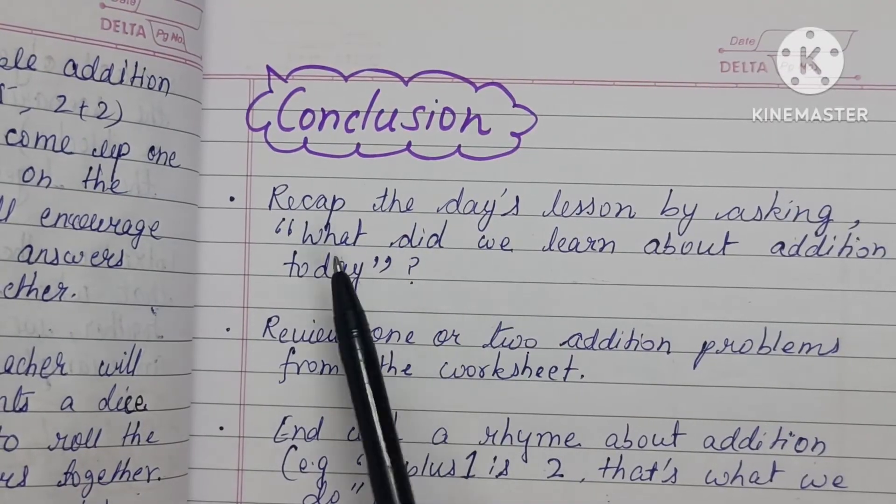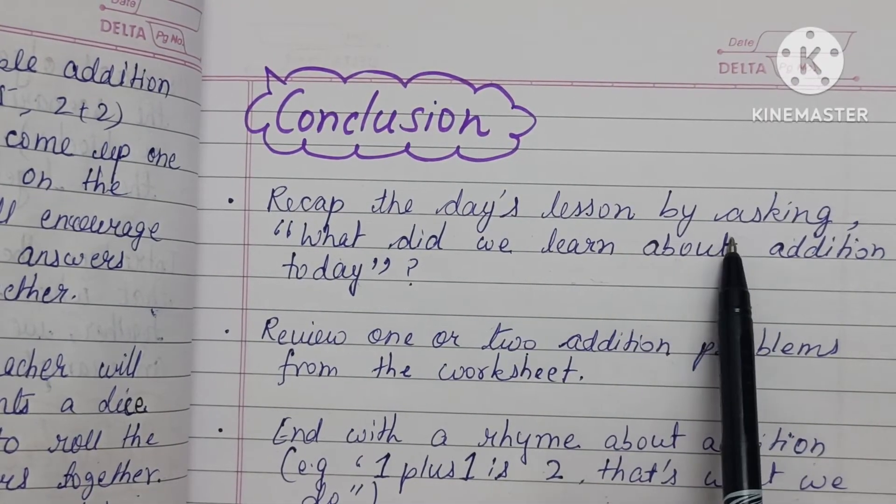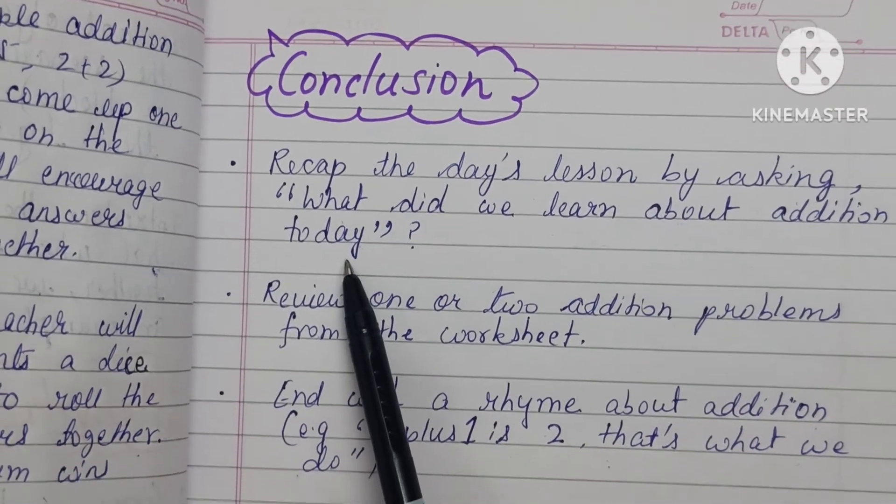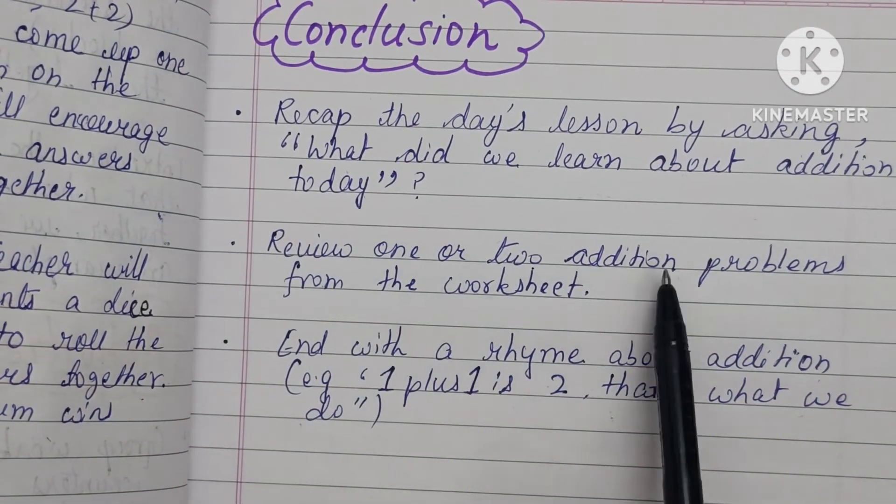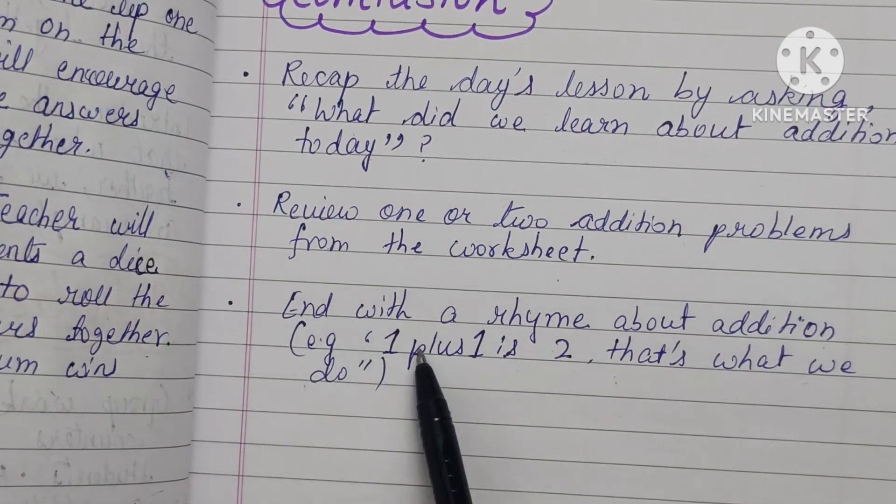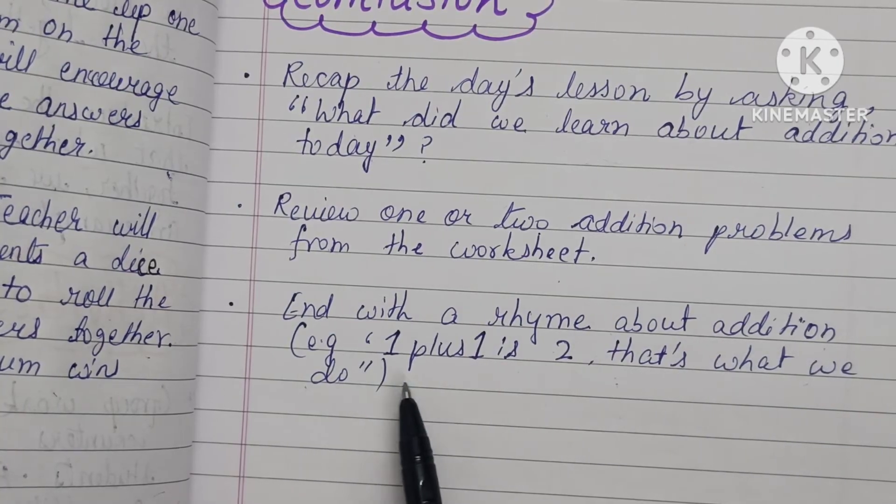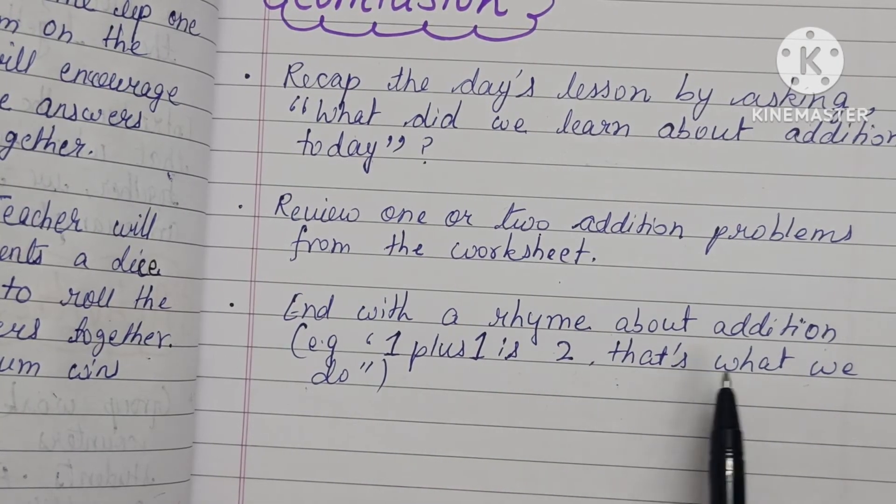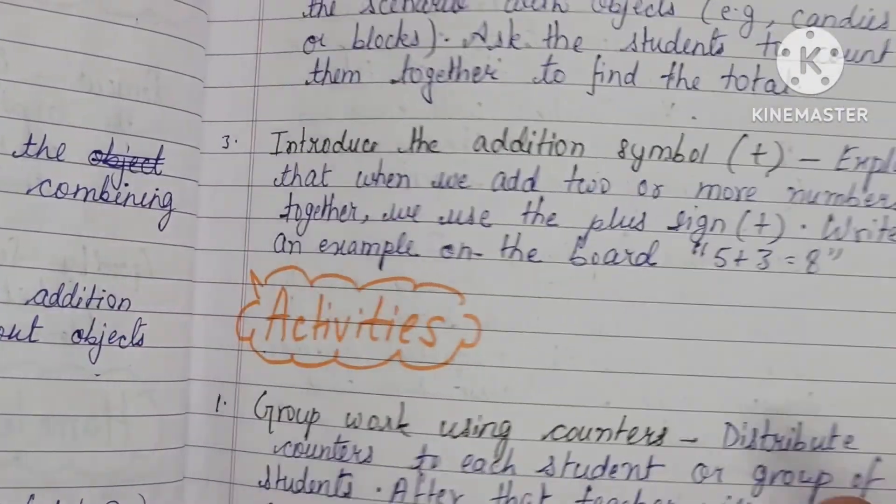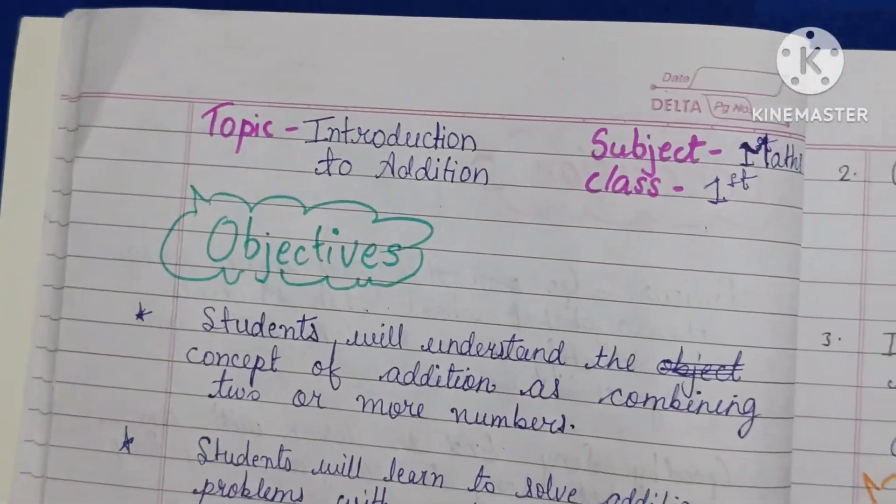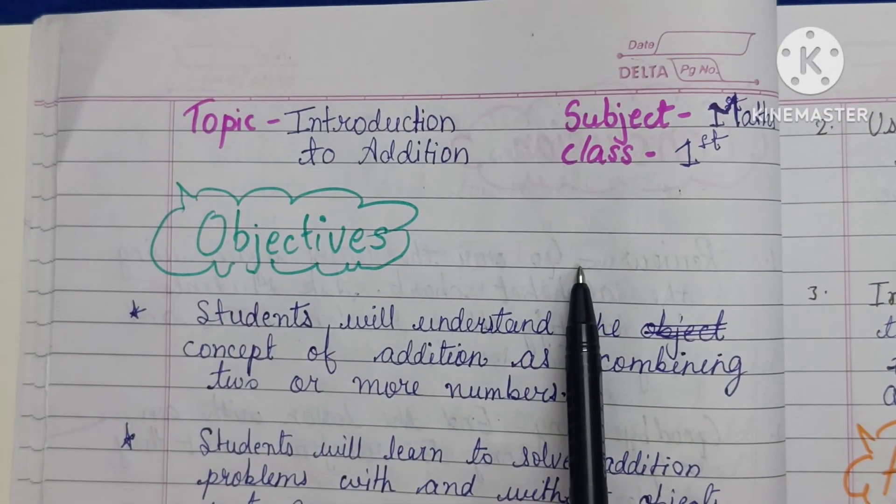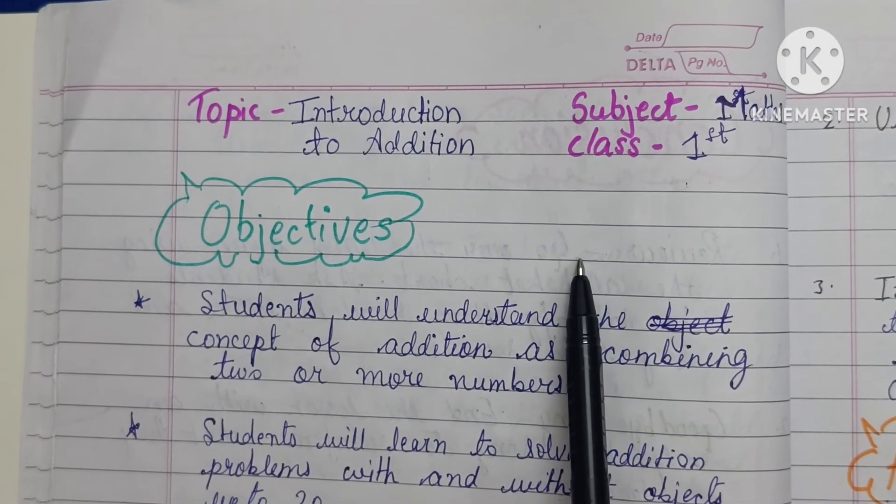Conclusion: Recap the day's lesson by asking, what did we learn about addition today? Review one or two addition problems from the worksheet and end with a rhyme about addition, example: one plus one is two, that's what we do. So this is a lesson plan of introduction to addition. If you like my lesson, kindly like my video and subscribe my channel. Thank you.